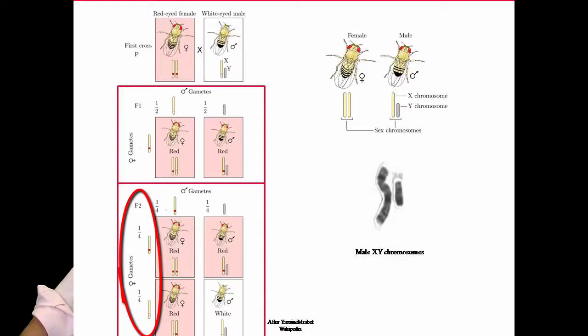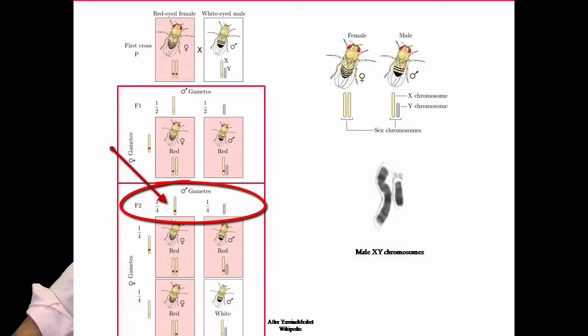which is here on the left side, with the white X chromosome and a red chromosome, and it's going to mix with a male with a red X chromosome and a Y with no trait.